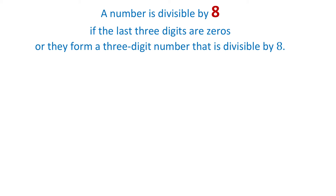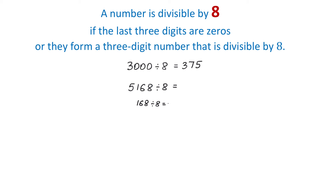A number is divisible by 8 if the last 3 digits are 0s, or they form a 3-digit number that is divisible by 8. For example, the number 3000 is divisible by 8 because the last 3 digits are 0s, and 3000 divided by 8 is 375. The number 5168 is also divisible by 8 because the last 3 digits — 1, 6, 8 — form a number that is divisible by 8. 168 divided by 8 is 21, therefore 5168 is also divisible by 8 and the result is 646. So, if in a number the last 3 digits are 0s or they form a number that is divisible by 8, then the whole number is divisible by 8.